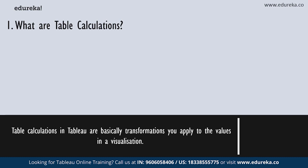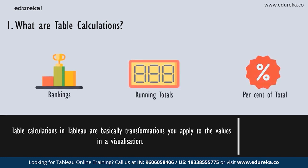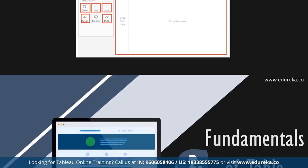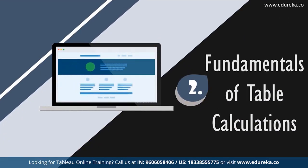You can use table calculations to transform values, including but not limited to rankings, running totals, and percentage of total. For all charts in Tableau, there is a virtual table determined by certain dimensions in the view. This table is not the same as the tables in your data source — specifically, the virtual table is determined by the dimensions within the level of detail in a Tableau worksheet. Now that you know what table calculations are, let's move on to the fundamentals.